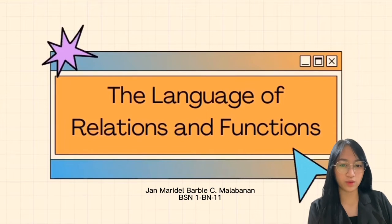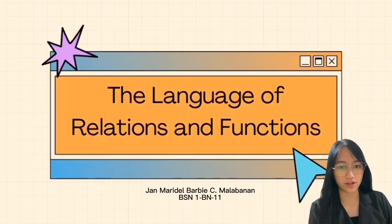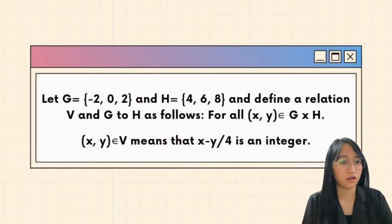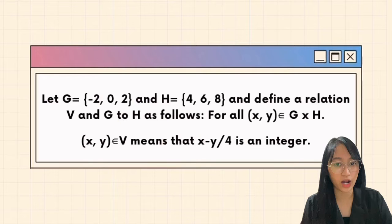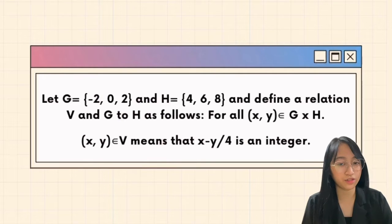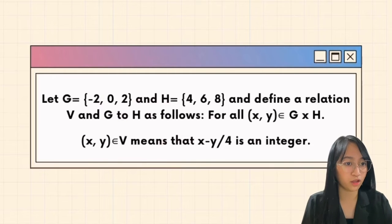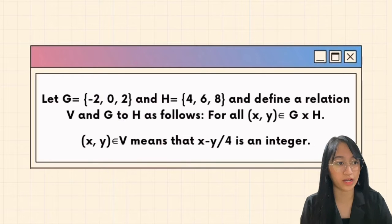Good day everyone. The topic for today is about the language of relations and functions. We have a given sample: set G equals {-2, 0, 2} and set H equals {4, 6, 8}. We define a relation V from G to H as follows: for all x and y, where x is an element of G and y is an element of H, (x, y) is an element of relation V means that (x minus y) over 4 is an integer.